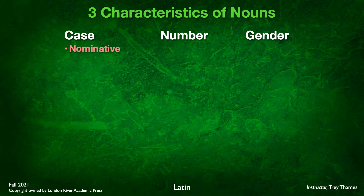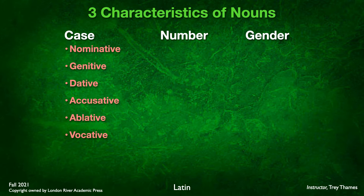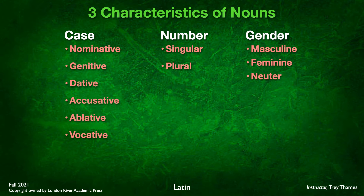Our options for cases are: nominative, genitive, dative, accusative, ablative, and vocative. For number, we have singular and plural. For gender, we have masculine, feminine, and neuter.